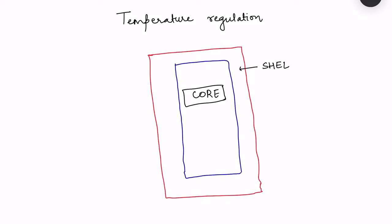Core body temperature is the temperature surrounding the deep tissues, and it is this core body temperature that is kept within a constant range. Shell temperature is the temperature of the surrounding areas, basically the skin, and this temperature varies with the environment. When the environment is cold, shell temperature will be at a very low value; when the environment is hot, shell temperature may be much higher, closer to the environmental temperature.